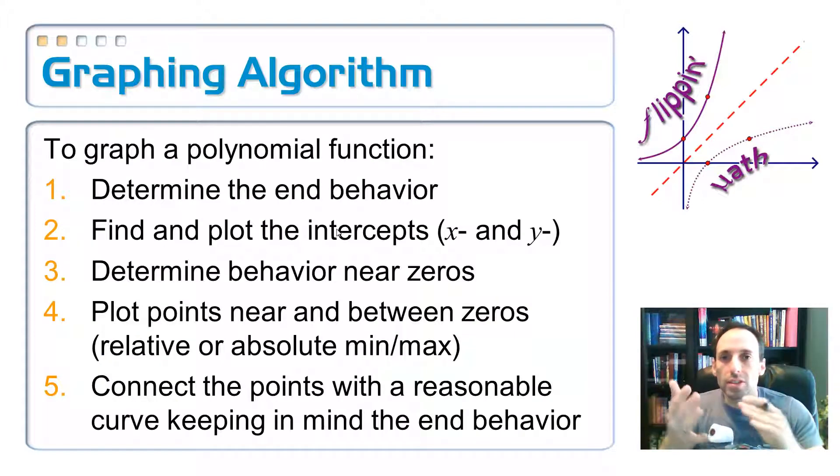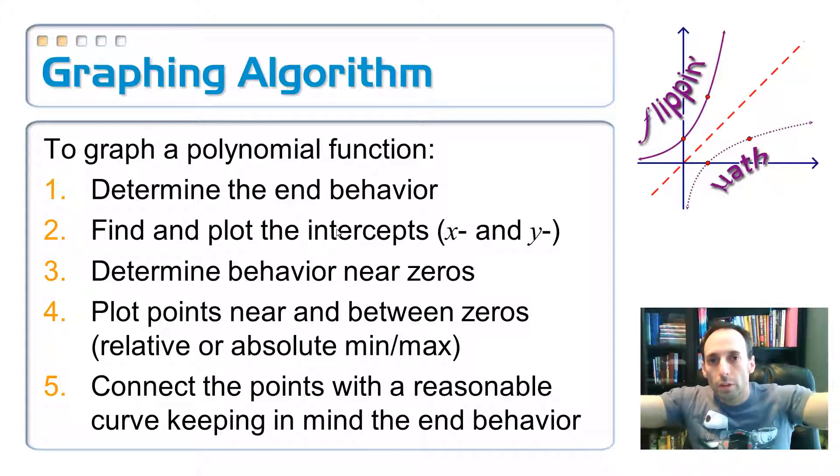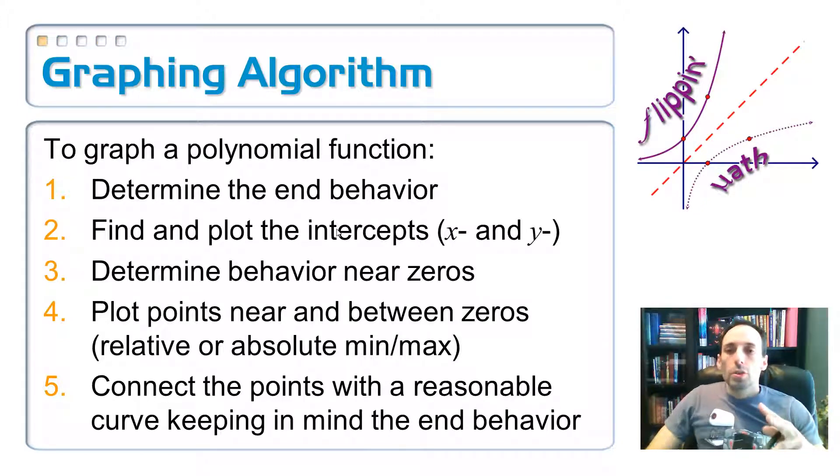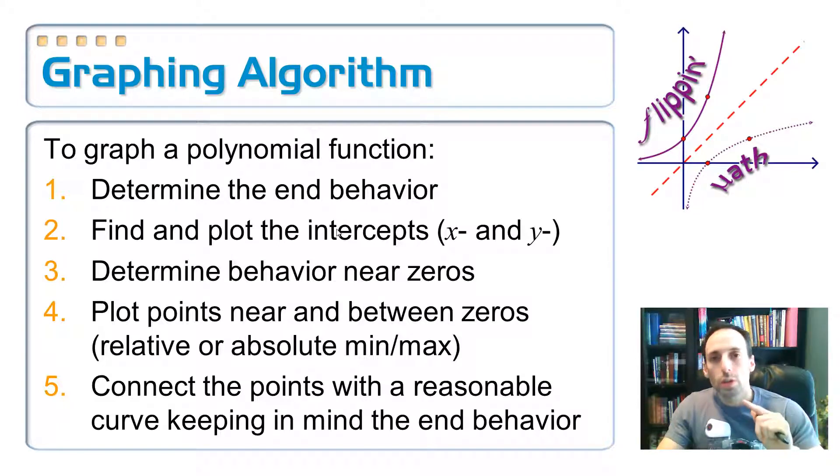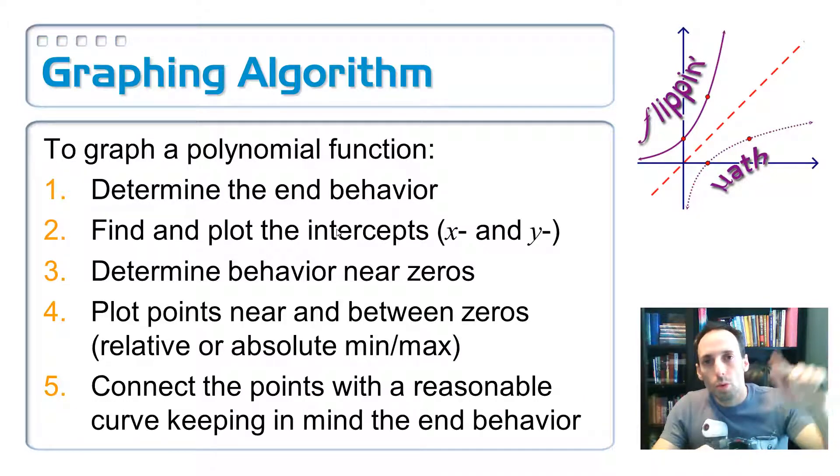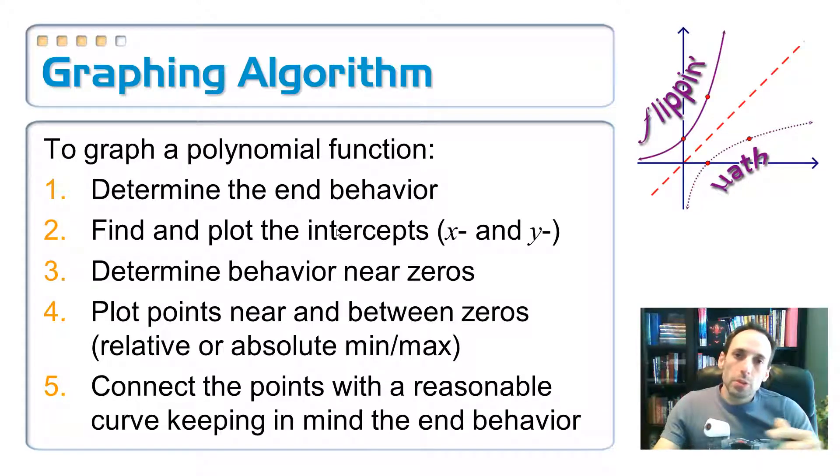All right. So here is a graphing algorithm. Here are the steps that you take in order to successfully sketch one of these graphs. And it's not too much trouble. So the first thing you want to do is determine the end behavior. Is that thing a referee or is it a disco dancer? Number two, find your intercepts. Find your x-intercepts and find your y-intercept. There should only be one of those. Number three, determine the behavior around those things. Is it going to be tangent around the x-intercepts or is it going to cross through the x-intercepts? Number four, sometimes you might want to plot an additional point. You'll see that we probably won't have to do that because what we're looking at is just a little sketch in order to connect those points. Thread it through there nice and smooth. So connect the points with a reasonable curve, keeping in mind what the end behavior is. That's the last step. So let's take a look. Do one of these things by hand.